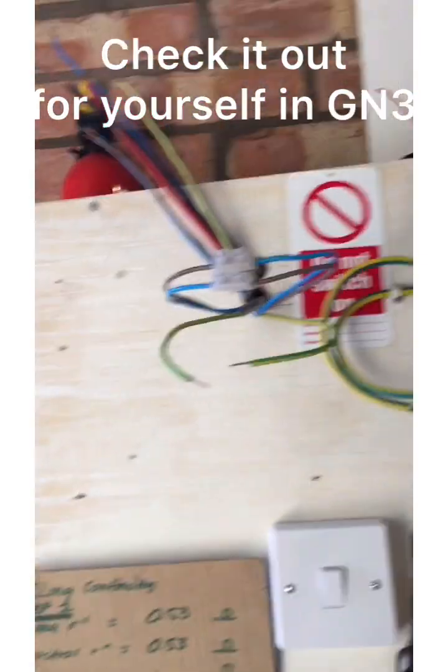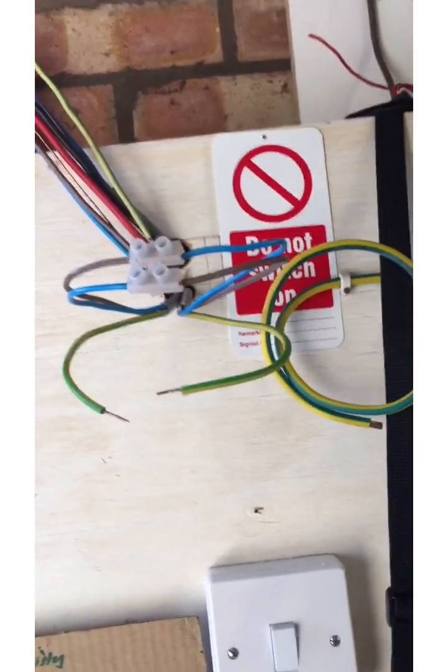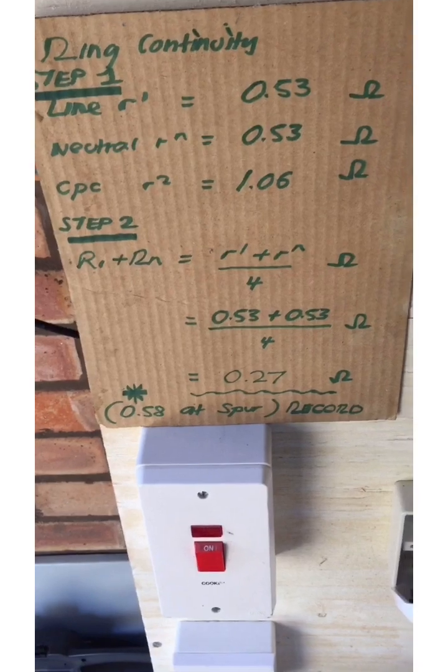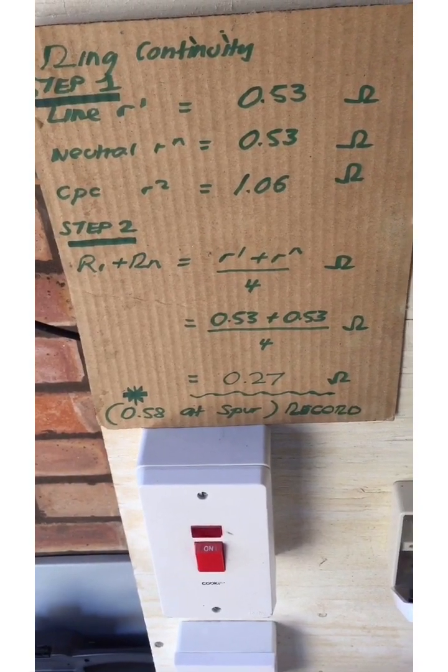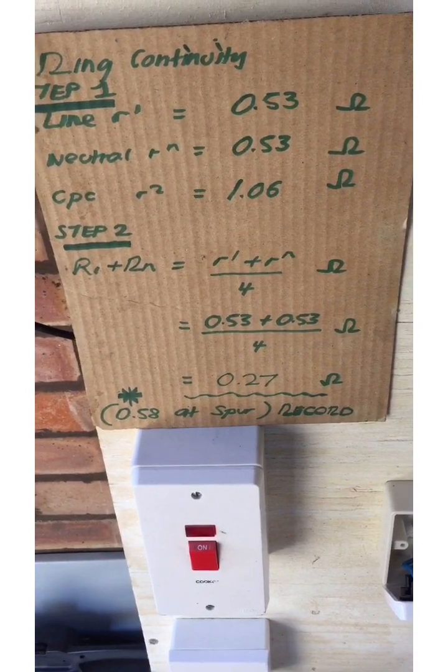So what we can do now is, the expected value that we are looking for here, if you look at step two, because of the way that we've connected them, we expect the R1 plus Rn value, which is what we take at the socket outlet, to roughly equate to the maths that we've got there.